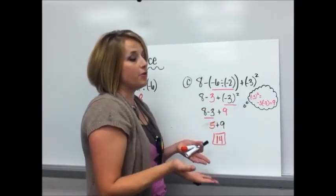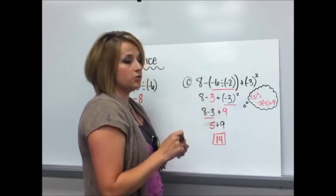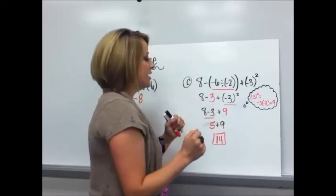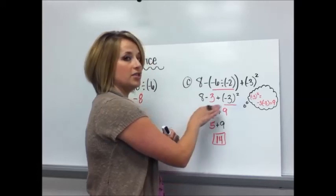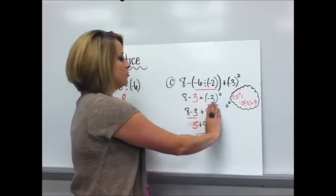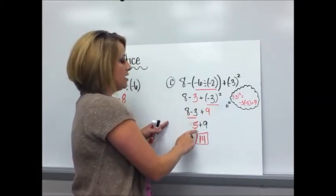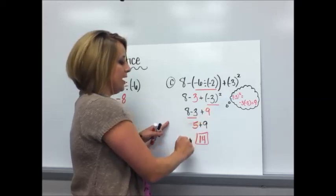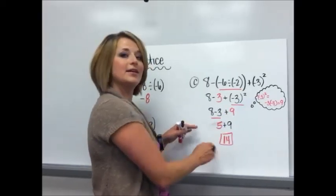Now, I look for multiplying and dividing. There isn't any, so I go to addition and subtraction, and I do that in the same step, left to right. That is why I am subtracting before I am adding. I'm going left to right. 8 minus 3 is 5. Bring down my 9. 5 plus 9 is 14.